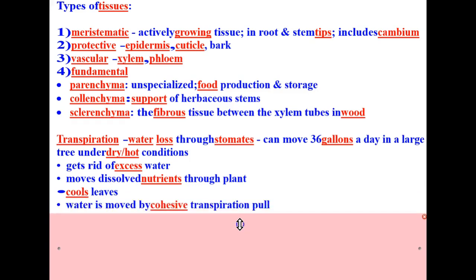Transpiration takes place by the cohesive pull of water. You might remember that cohesion is a characteristic of water that's attracted to itself, and water is moved by cohesion through the process of transpiration pull up through the plant.